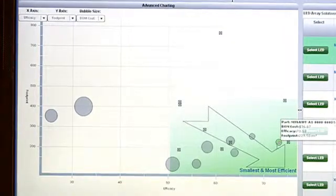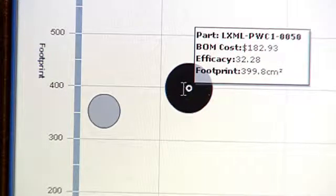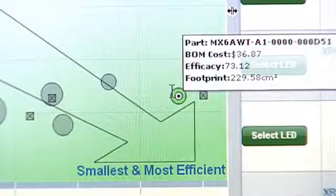The last parameter you see on the plot here is the bubble size, or the diameter of these circles. And that represents the cost of the heat sink in the LEDs. The smaller those circles are, the lower the cost.